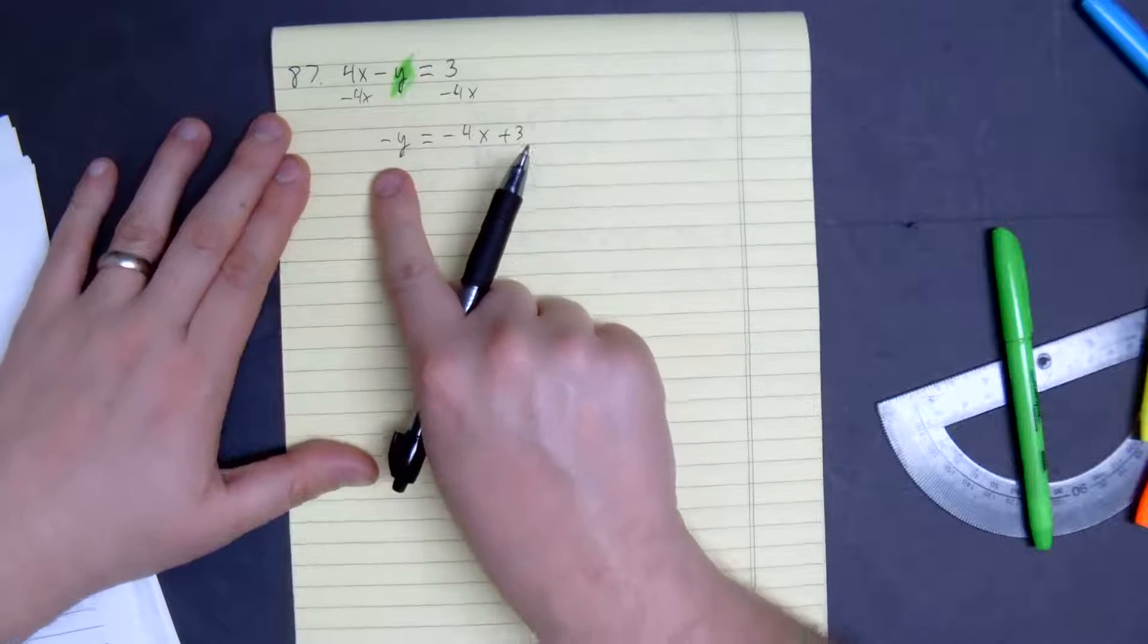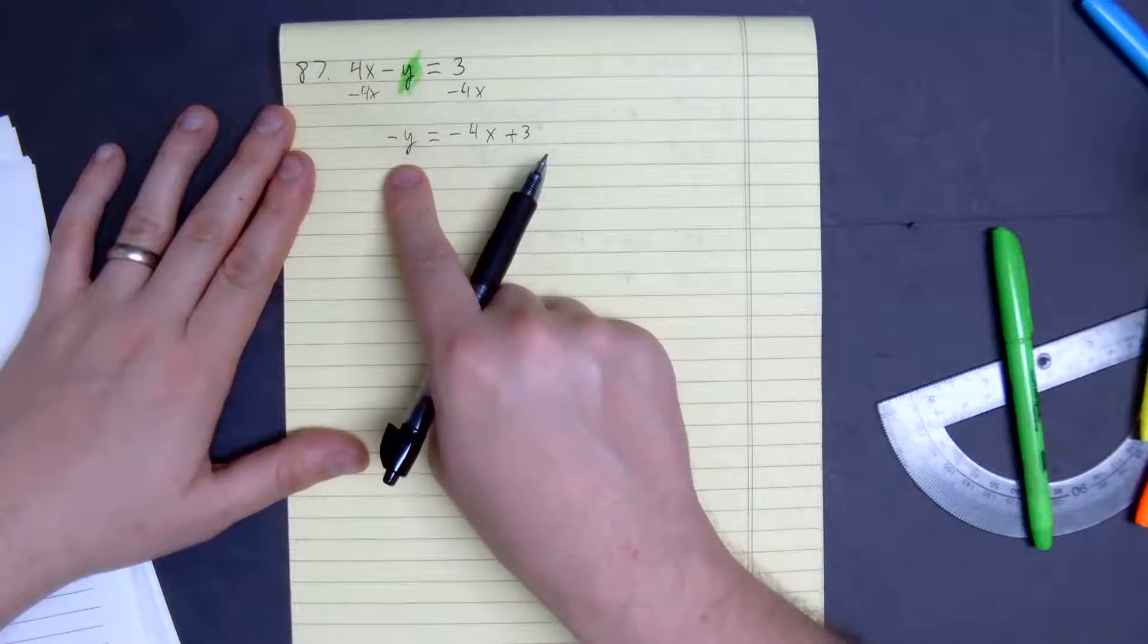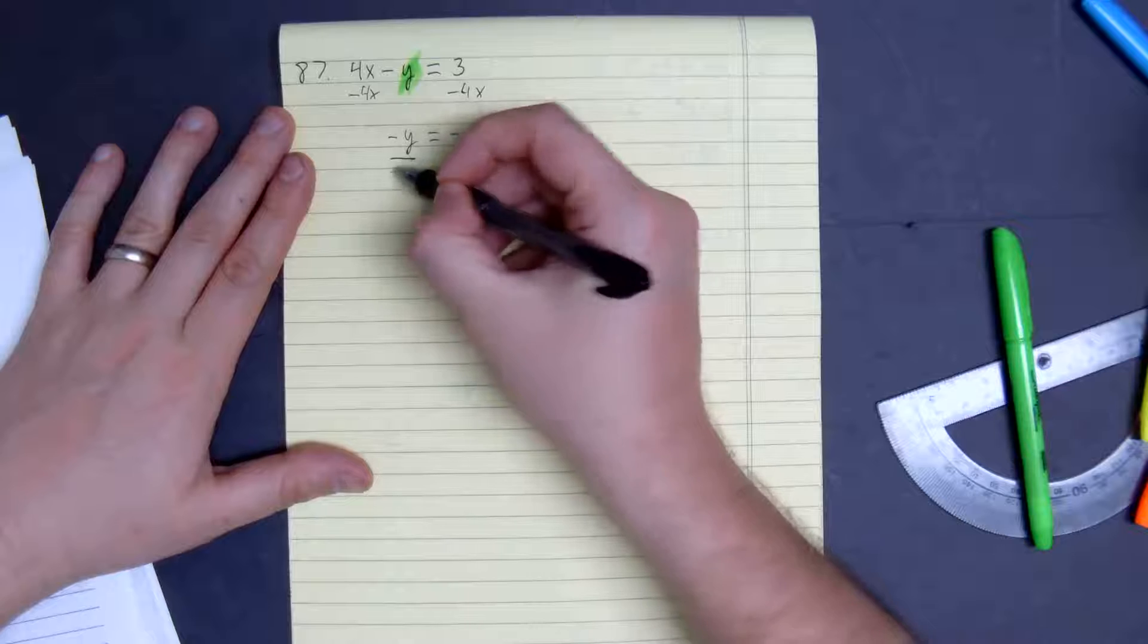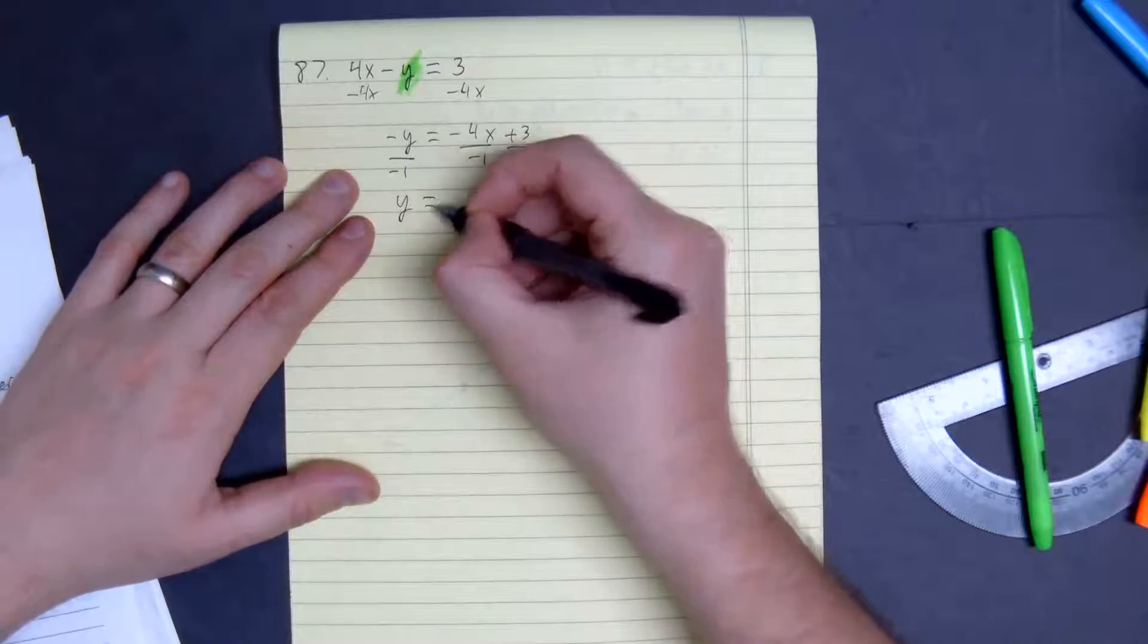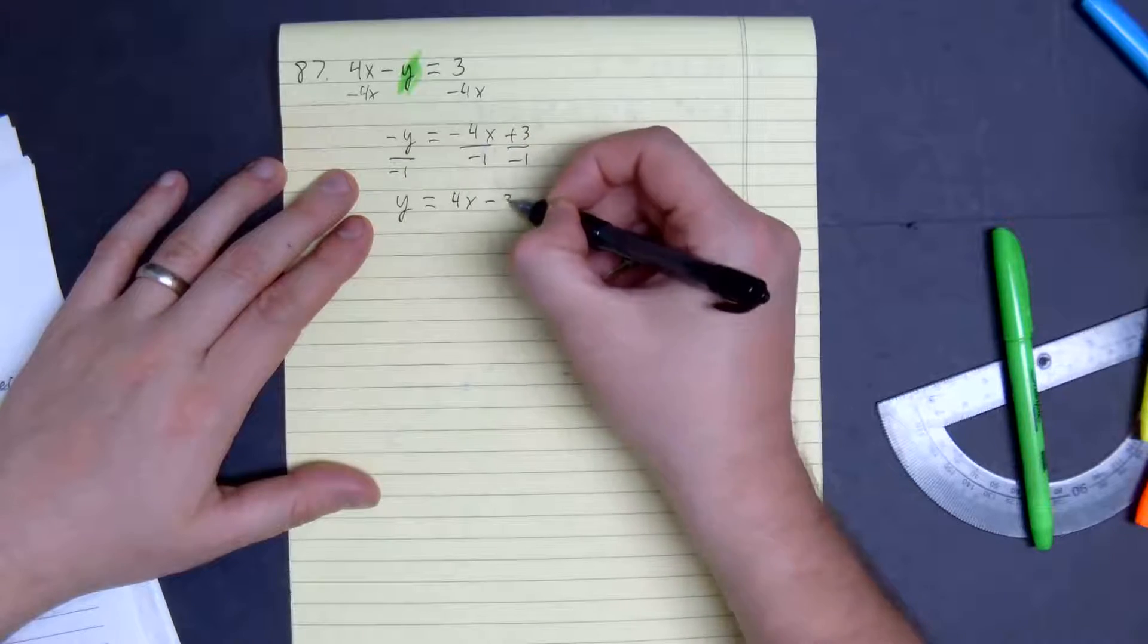We don't want to have a negative for our output, especially in slope-intercept form. So we divide both sides by negative 1. We get y is equal to 4x minus 3.